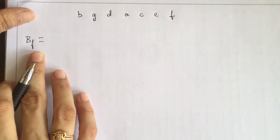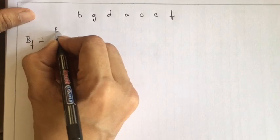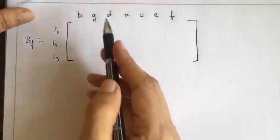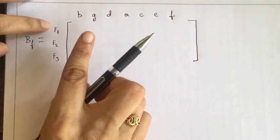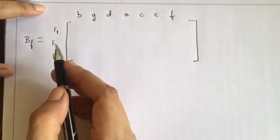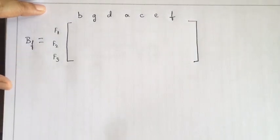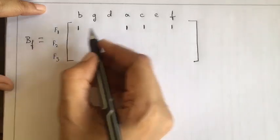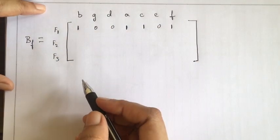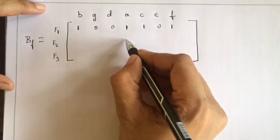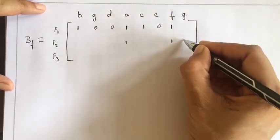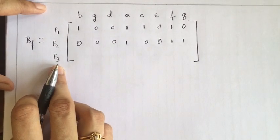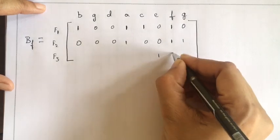The fundamental circuit matrix is denoted Bf. Fundamental cycles are taken along rows: first cycle, second, third. If the edge is present in a fundamental cycle the entry is 1, otherwise 0. F1 contains edges A, B, C, F — so those entries are 1, rest are 0. F2 contains edges A, F, G — those entries are 1, rest are 0. The third circuit contains edges E, F, and D — those entries are 1.